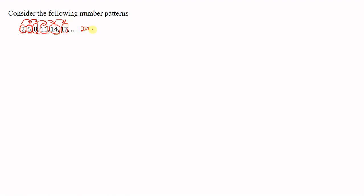The next term after 20 will be 20 plus 3, which is 23. Again, the next term will be 23 plus 3, which is 26, and this will continue in the same way. Now let's look at the next number pattern.